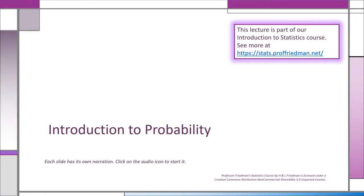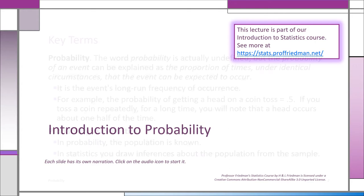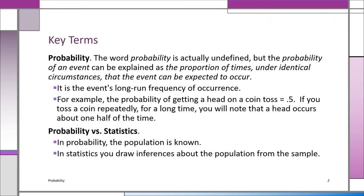Welcome to our lecture on probability. You may think we're going to define the word probability, but it really can't be defined. What we do define is the probability of an event. The probability of an event is the proportion of times under identical circumstances that the event can be expected to occur. It's the event's long-run frequency of occurrence over the very long term.